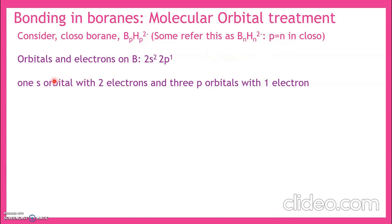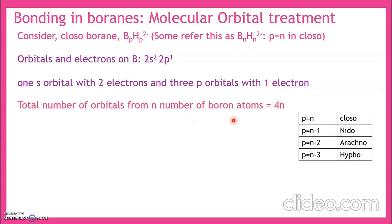The valence orbitals on boron are 2s² 2p¹. There is one s orbital with 2 electrons and 3p orbitals — px, py, and pz — with 1 electron. The total number of orbitals on each boron is 1s + 3p = 4 orbitals. If there are n boron atoms, the total number of orbitals is 4n. Here n refers to the number of vertices in the parent polyhedron, and p equals n for the closo structure.